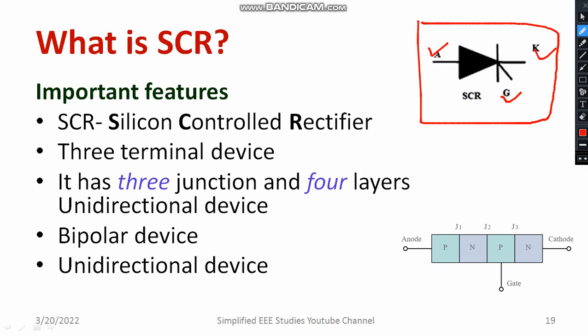Let us continue the discussion. It is a three junction device. There are three junctions: J1, J2, and J3. If I talk about the layers, it is a PN-PN junction device. Therefore, how many layers does it have? One, two, three, and four layers. There are four layers available in this particular device.